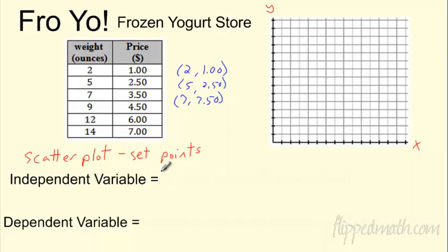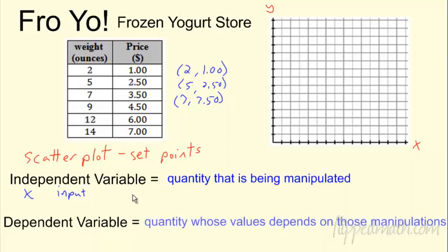Before we go ahead and plot these points, let's talk about these things. We've got an independent variable and a dependent variable. The independent variable is the quantity that's being manipulated. This is independent. You can change it, do whatever you want to it. A lot of times you'll see it as the input. It's what goes on the x-axis. The dependent variable is the quantity whose values depend on those manipulations. This is your output. This is what's coming out. And this is the y. So sometimes your variables, one causes one to change. In this case, my weight, however much I buy, is causing my price to change.